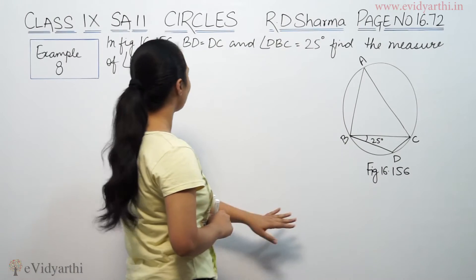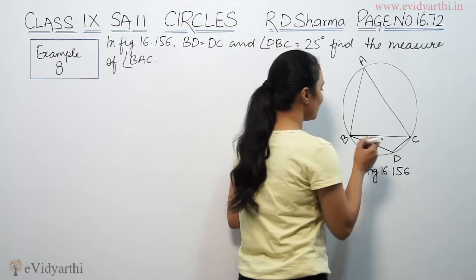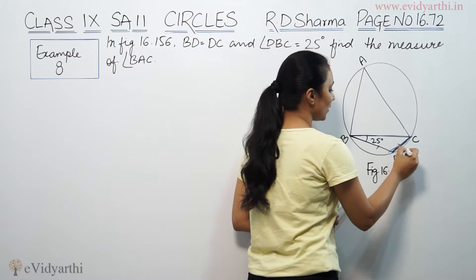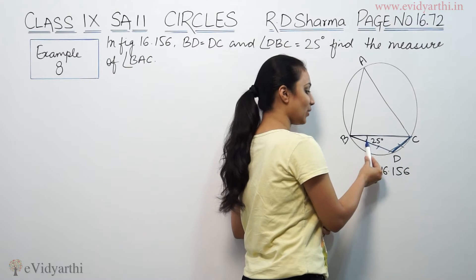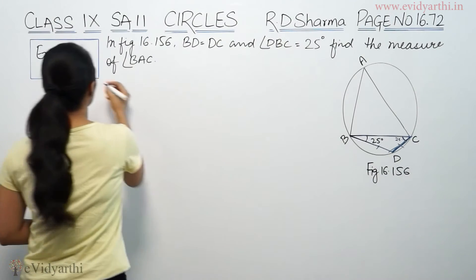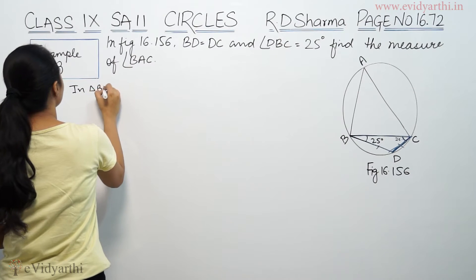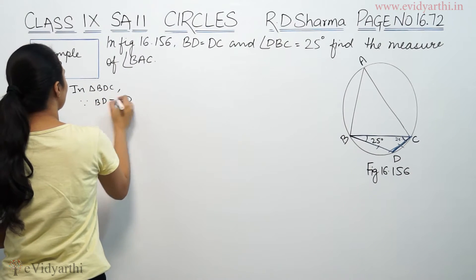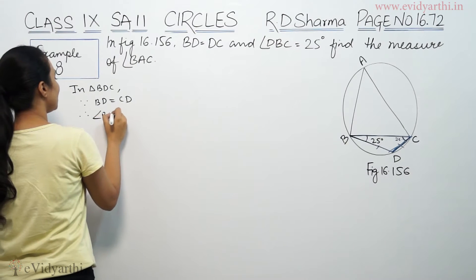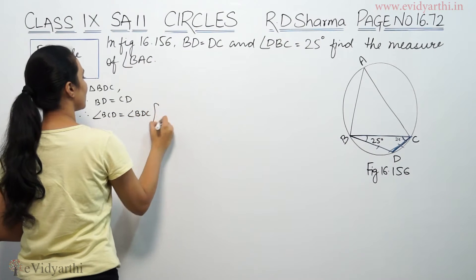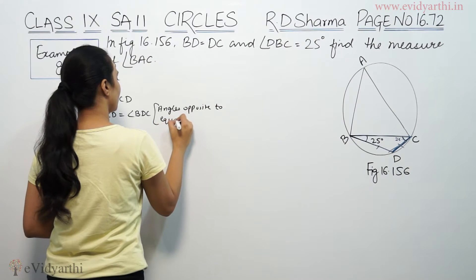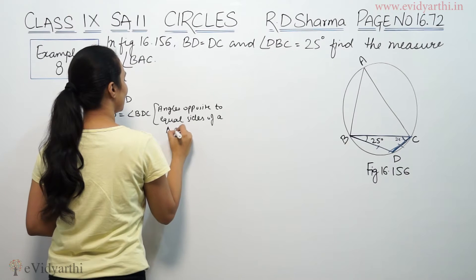The problem states BD is equal to BC. So in triangle BDC, if there are two sides equal, then the opposite angles will be equal. This side's opposite angle is 25 degrees, so this side's opposite angle will also be 25 degrees — that means this is also 25. Since BD is equal to CD, therefore angle BCD is equal to angle CBD. Angles opposite to equal sides of a triangle are equal.